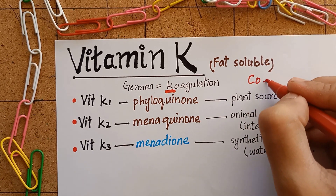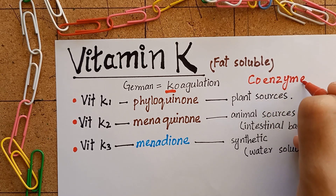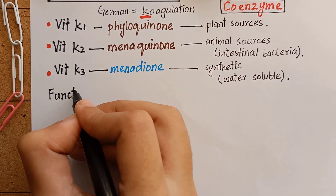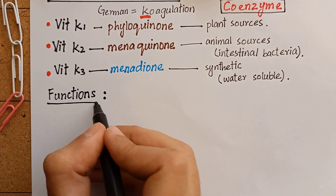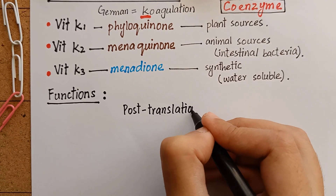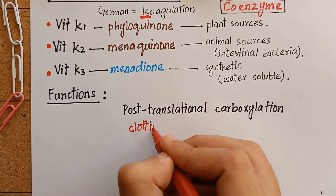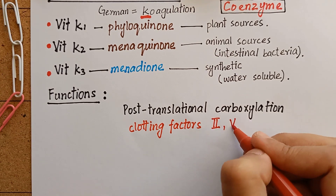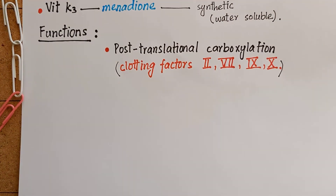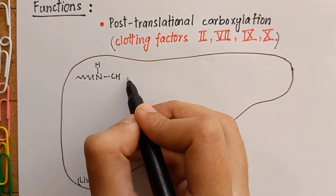Although vitamin K is classified as a fat-soluble vitamin, the synthetic form menadione is water-soluble. Vitamin K is the only fat-soluble vitamin which acts as a coenzyme. Moving to the functions of vitamin K, it is required for post-translational carboxylation of clotting factors 2, 7, 9, and 10.